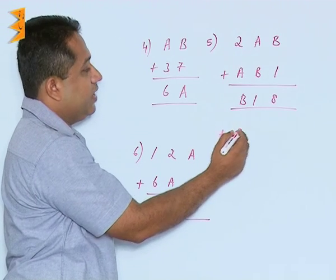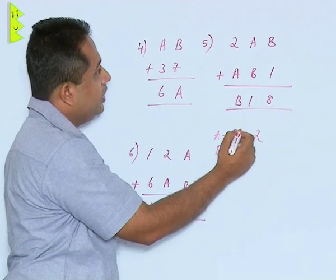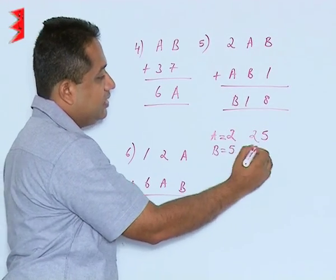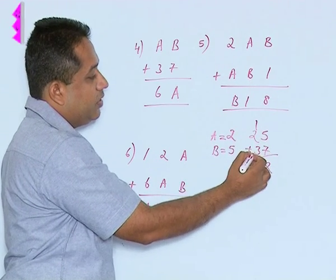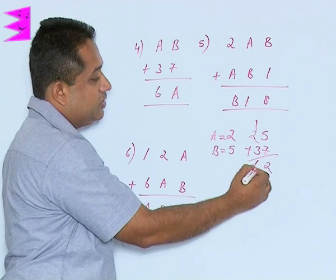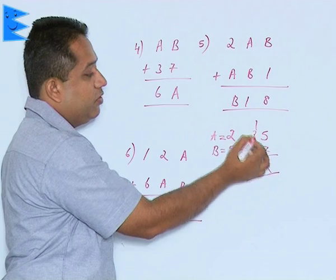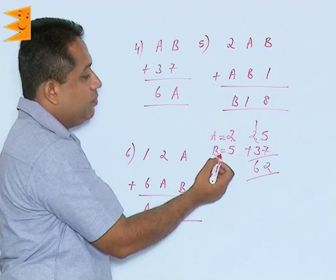Now by substituting, let us verify whether it is coming or not. So A is 2. So this 2 here and the value of B is 5. So 25 plus 37. 7 and 5 is 12. So 2. 1 carried over. 3 plus 2 is 5. 5 plus 1 is 6. So we find that the number is 62. This value and this value both are same. So we can say that the value of A is 2 and B is 5 is correct.